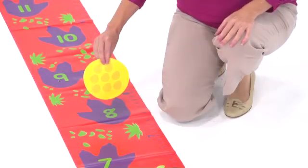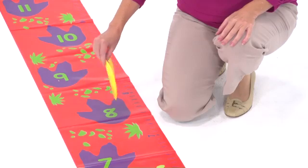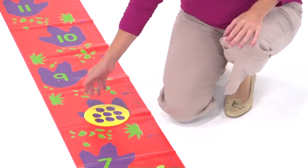The discs are blank on the opposite side, so they can be used to cover the numerals on the mat for guessing and memory games.